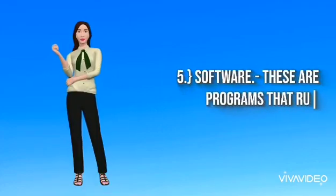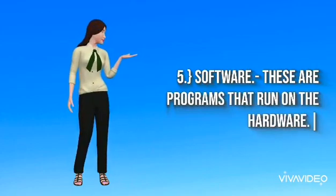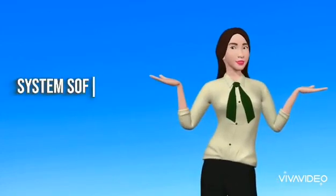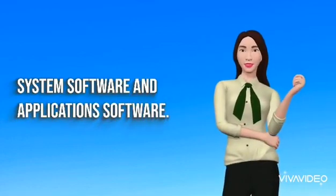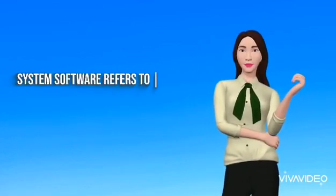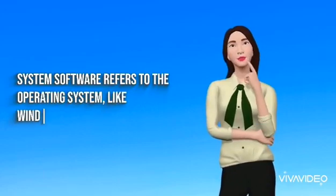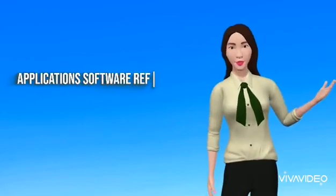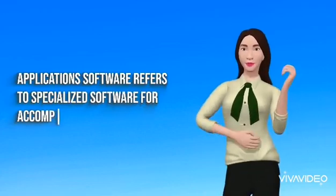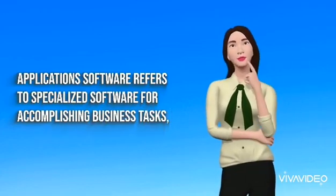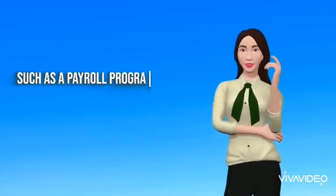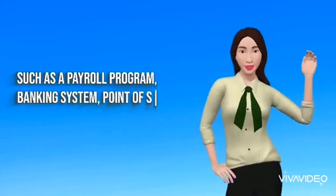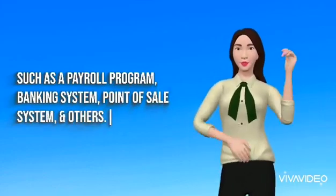5. Software. These are programs that run on the hardware. The software is broken down into two major categories namely system software and applications software. System software refers to the operating system, like Windows, Mac OS, and others. Applications software refers to specialized software for accomplishing business tasks, such as a payroll program, banking system, point-of-sale system, and others.